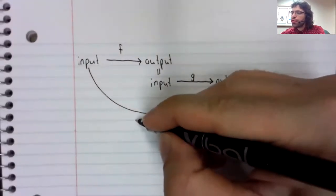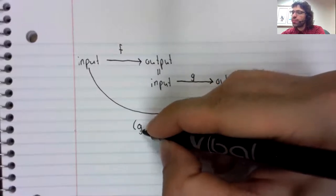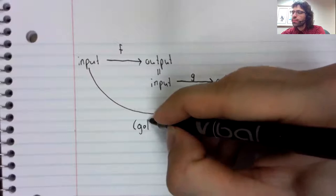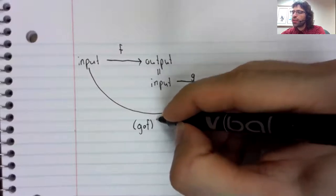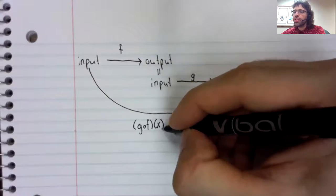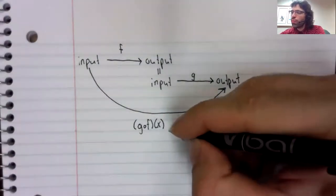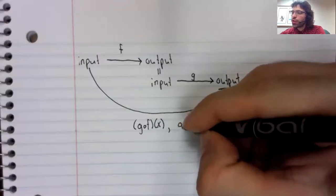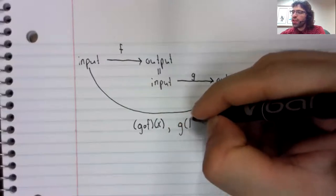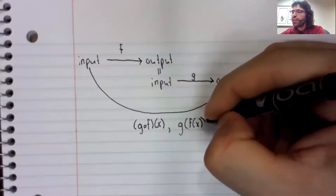Composition can be written a few different ways. Sometimes, you see the function separated by an open circle. Other times you see this, which is more descriptive.